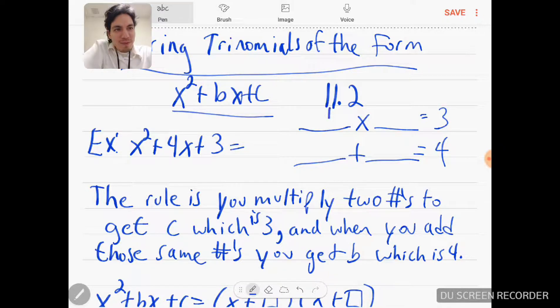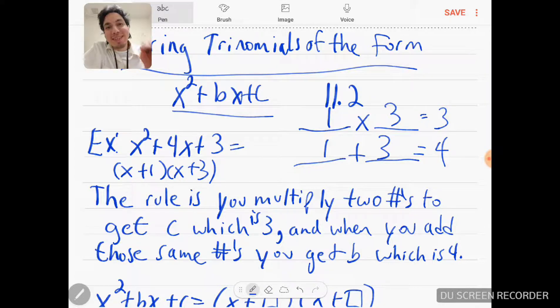So what's the two numbers you multiply to get 3? 1 times 3. And therefore those two same numbers you add to get the factor as well. So you rewrite this as (x + 1)(x + 3). And I guarantee you that when you multiply it back, you'll get the same thing that we first started with.